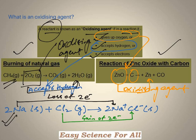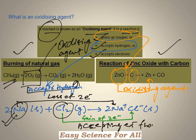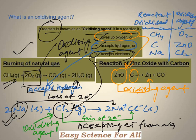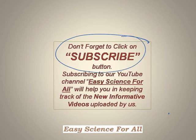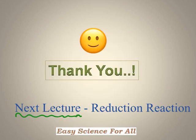Likewise, in this third reaction, chlorine and sodium are the two reactants. Chlorine is accepting electrons from sodium, so going by the third criteria, chlorine is the oxidizing agent in this case. We can summarize all this information in the form of a table. If you have any query regarding this lecture, you can comment to us, and don't forget to click on the subscribe button. Thank you.